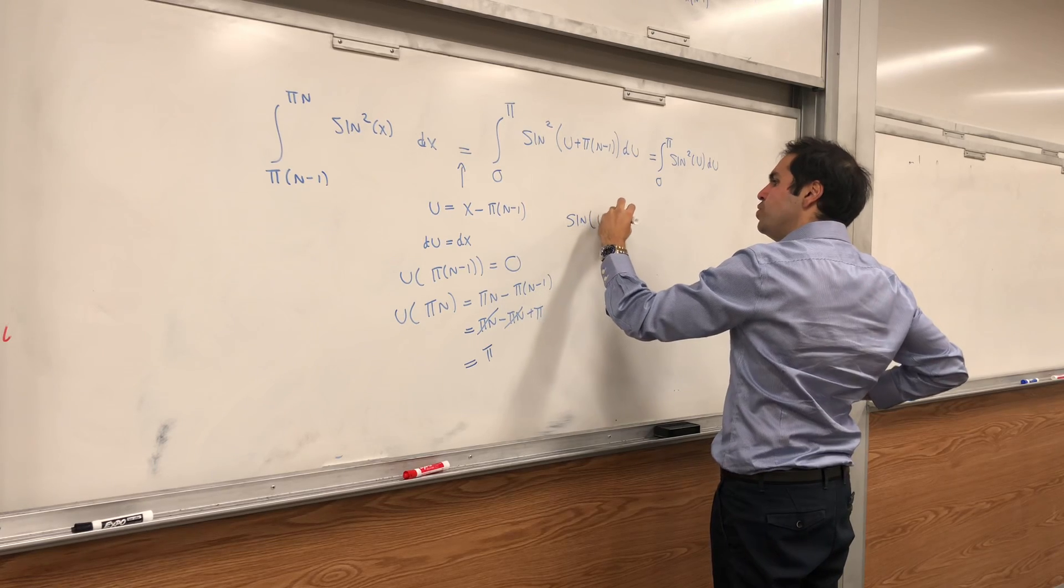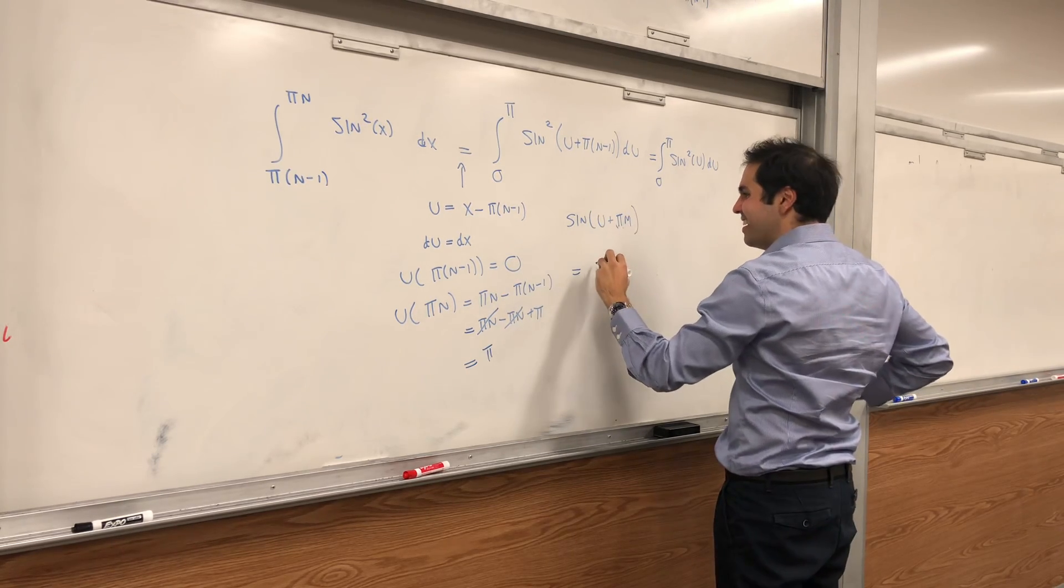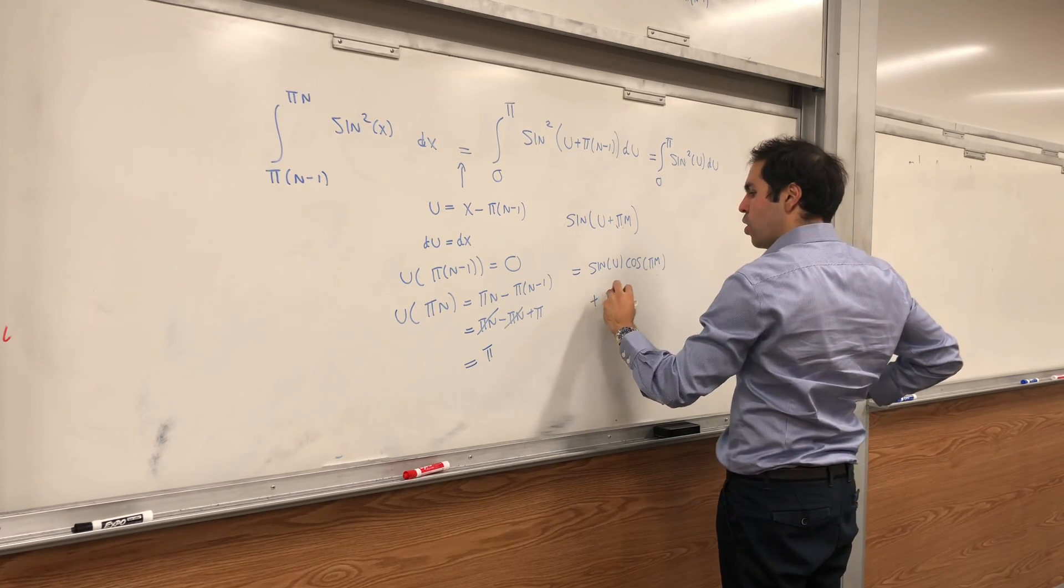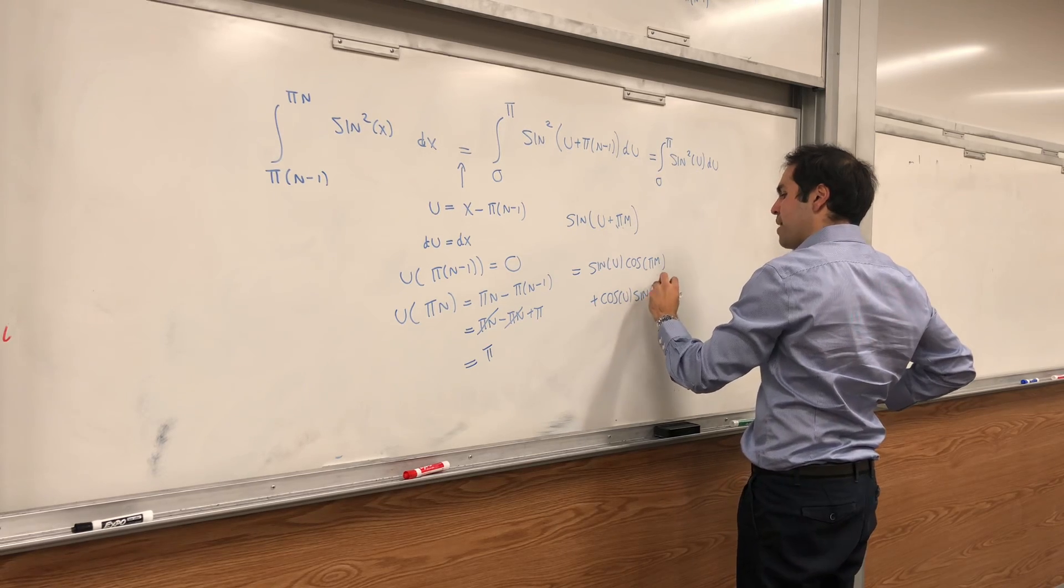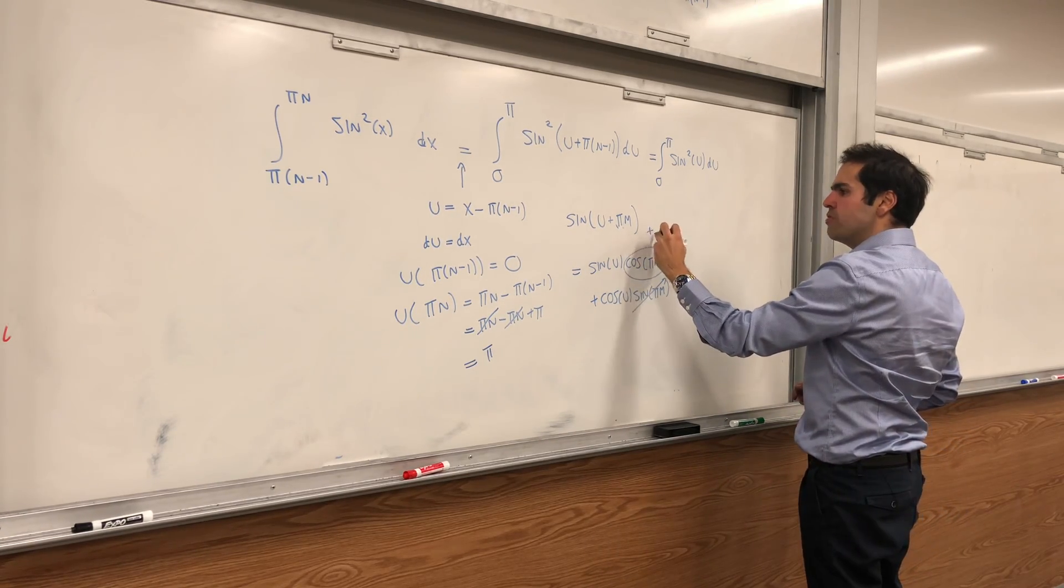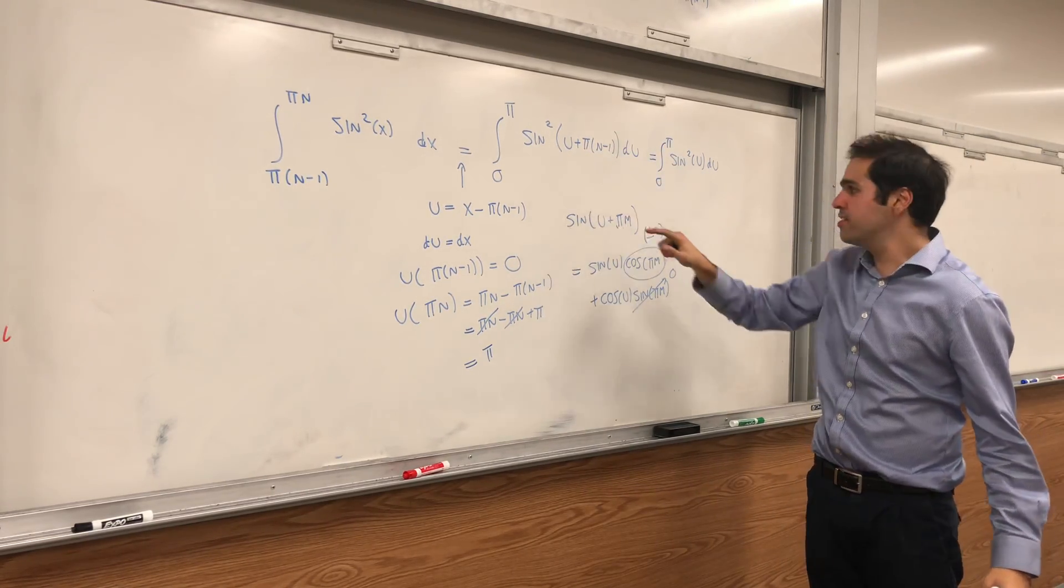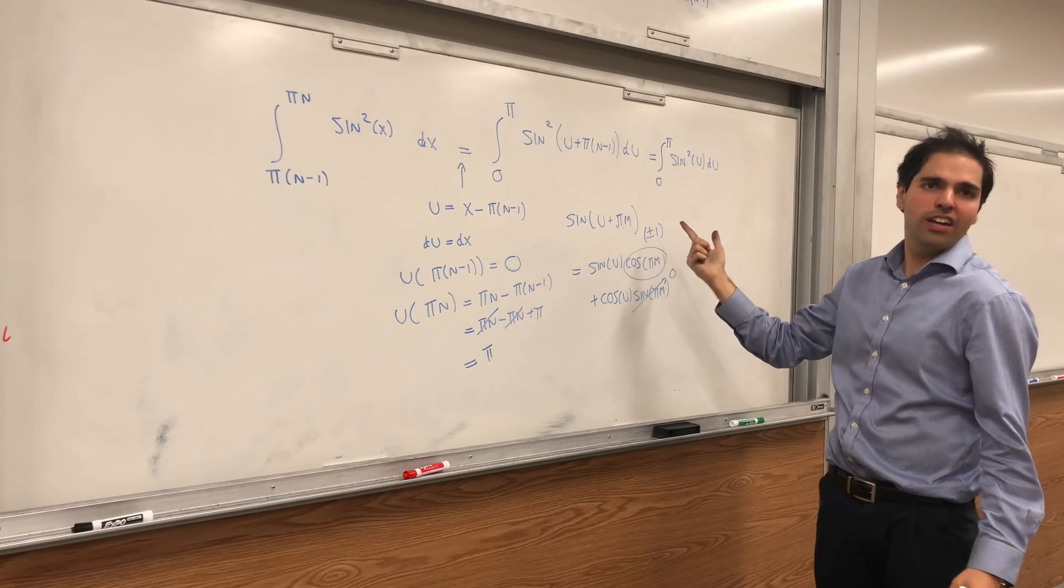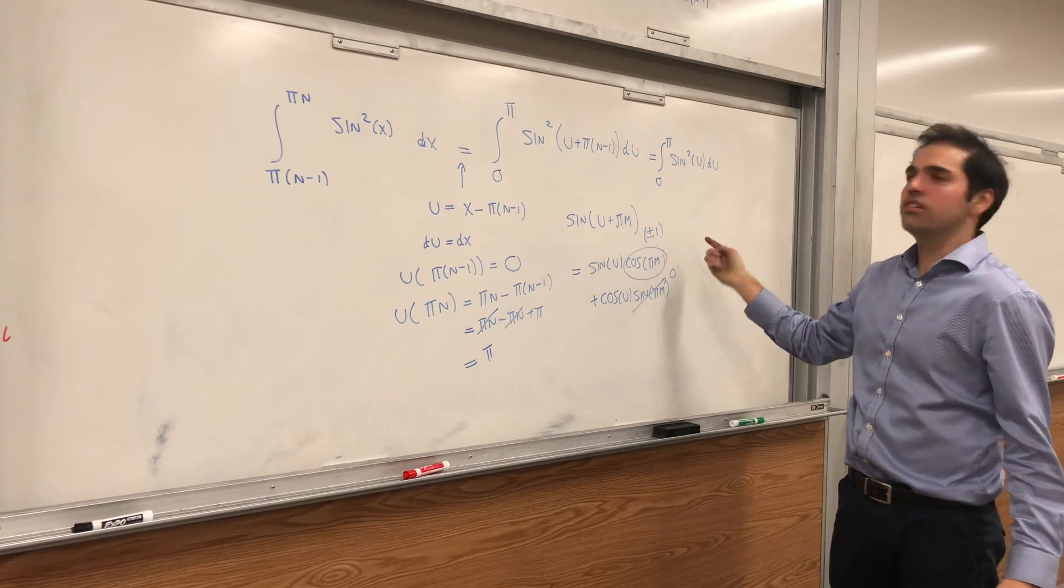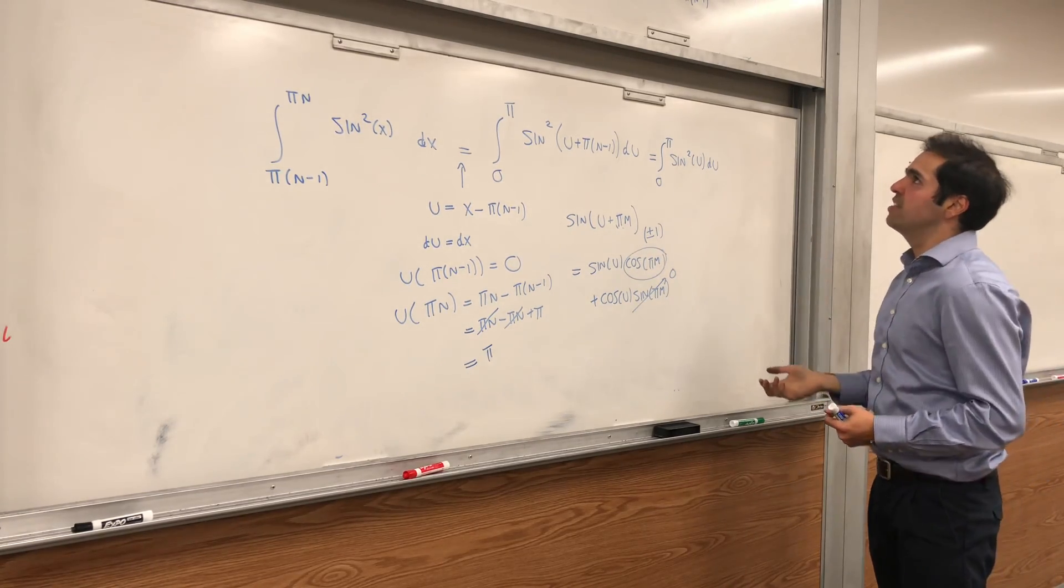Why is that? Well, look, sine of u plus pi, any multiple of pi, really, pi m, that's sine of u cosine of pi m plus cosine of u sine of pi m. Well, sine of pi m is 0, cosine of pi m is plus or minus 1. And the reason this is interesting is if you square this, plus or minus 1 squared is 1. And so sine squared of u plus any multiple of m is just sine squared of u.